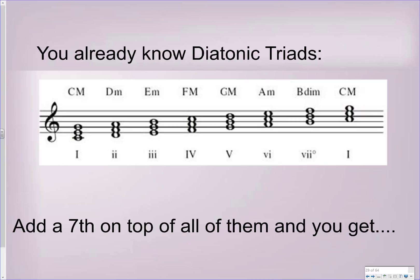You already know the diatonic triads with the Roman numerals for major keys by looking at this diagram. In major keys: 1 major, minor 2, minor 3, major 4, major 5, minor 6, diminished 7th, and major 1.